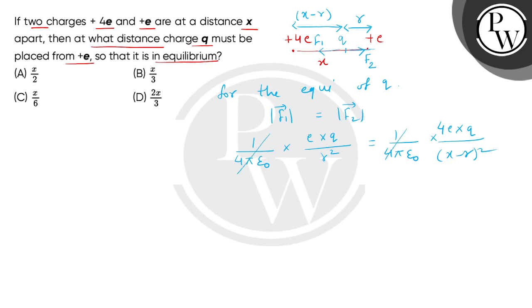Now 1 by 4π epsilon 0, e and q both sides will cancel. We will find that (x minus r) divided by r whole square equals 4.